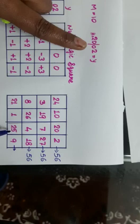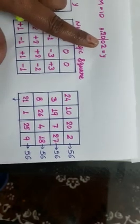21 plus 9, 9 plus 1, 10. 21 plus 25, it is 46 plus 10. See, if you add column also, you will be getting 56. You can check it here.